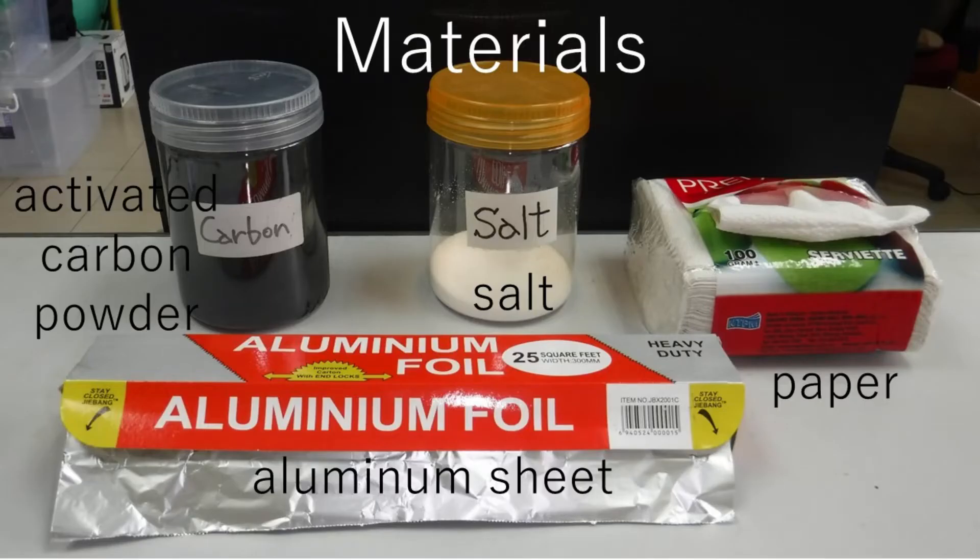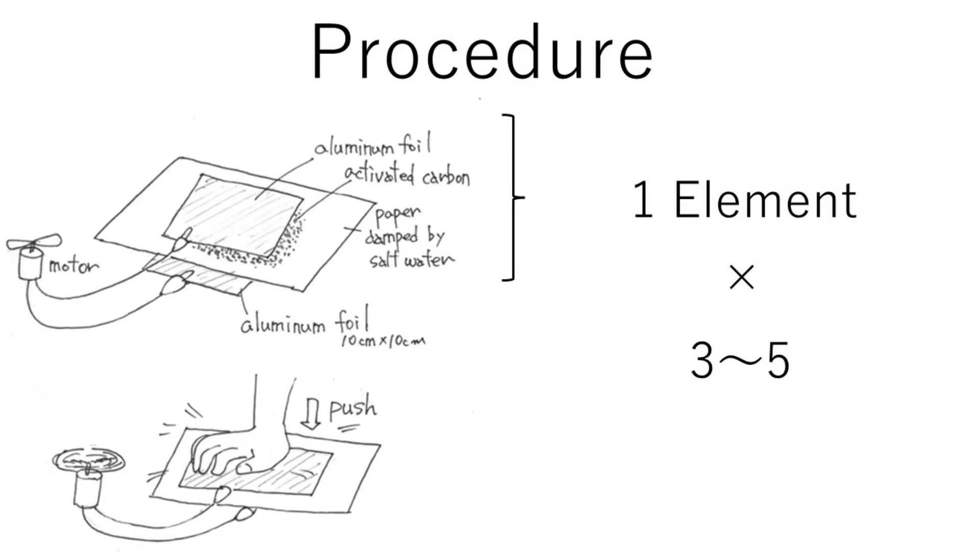Let's make a battery like a voltaic pile with aluminum sheet, activated carbon, and salt. An element is made by stacking an aluminum sheet, paper soaked in salt water, activated carbon, and an aluminum sheet in that order.